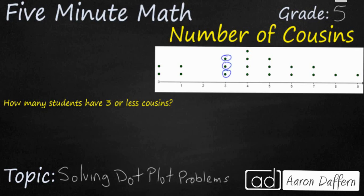So I've got one, two, three students that have three cousins and then if we're looking at three or less there's no students with two. There are two students with one cousin and two students with zero cousins. So there are a total of seven students with three cousins or less.